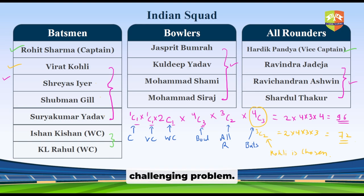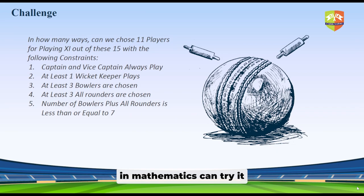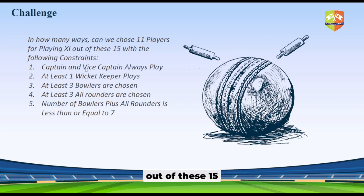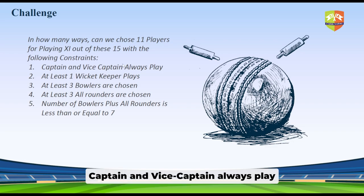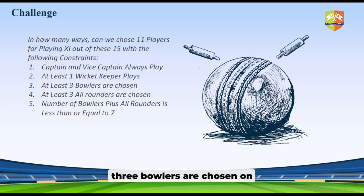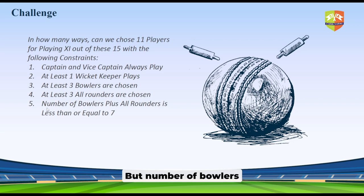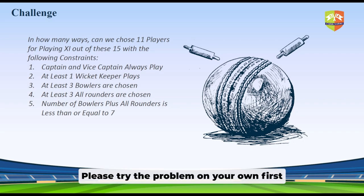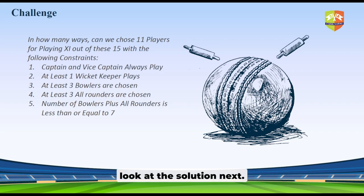Let's do one mathematically challenging problem for those interested in mathematics. In how many ways can we choose 11 players out of these 15 with the following constraints? Captain and vice captain always play. At least one wicket keeper plays out of the two. At least three bowlers are chosen out of the four. At least three all-rounders are also chosen. But the number of bowlers plus all-rounders must be less than or equal to seven. This makes things slightly more complicated, so please try the problem on your own first.